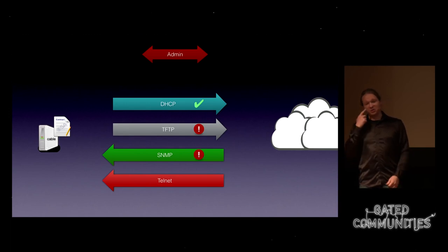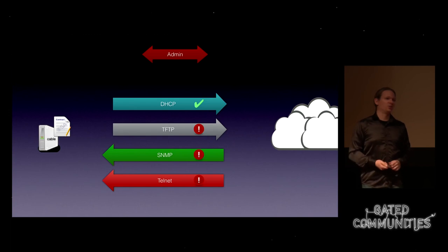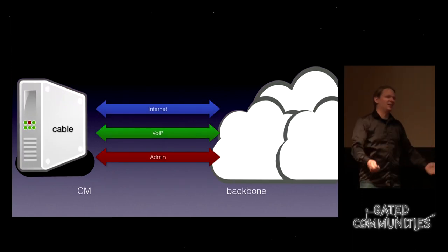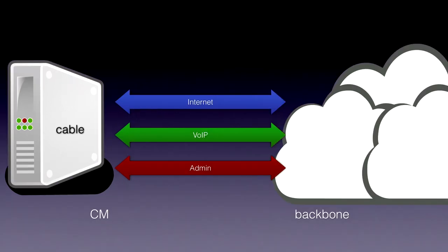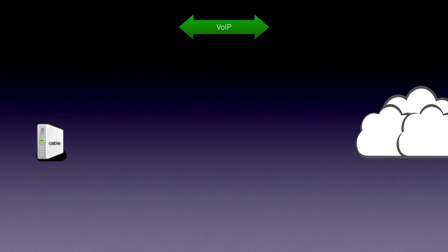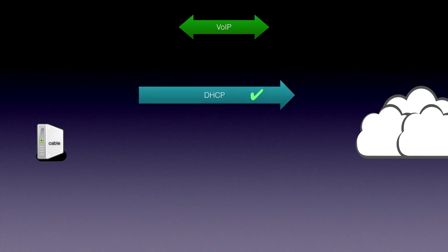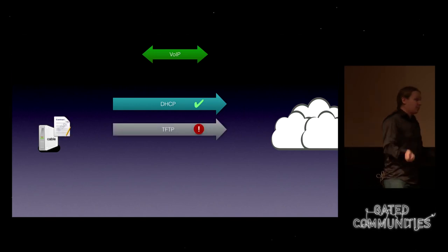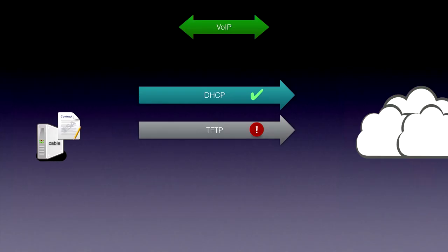The whole telnet access thing I wouldn't mark as secure either. But we didn't really come here for the admin network — we wanted to do Voice over IP. So how does VoIP look? It's kind of similar: it also does a DHCP request in the beginning. It does the same TFTP bit — so if you go and download the provisioning file from the VoIP MAC address, you have it. Nicely enough, all those cable providers registered consecutive MAC addresses, so if you have one you also have the others.